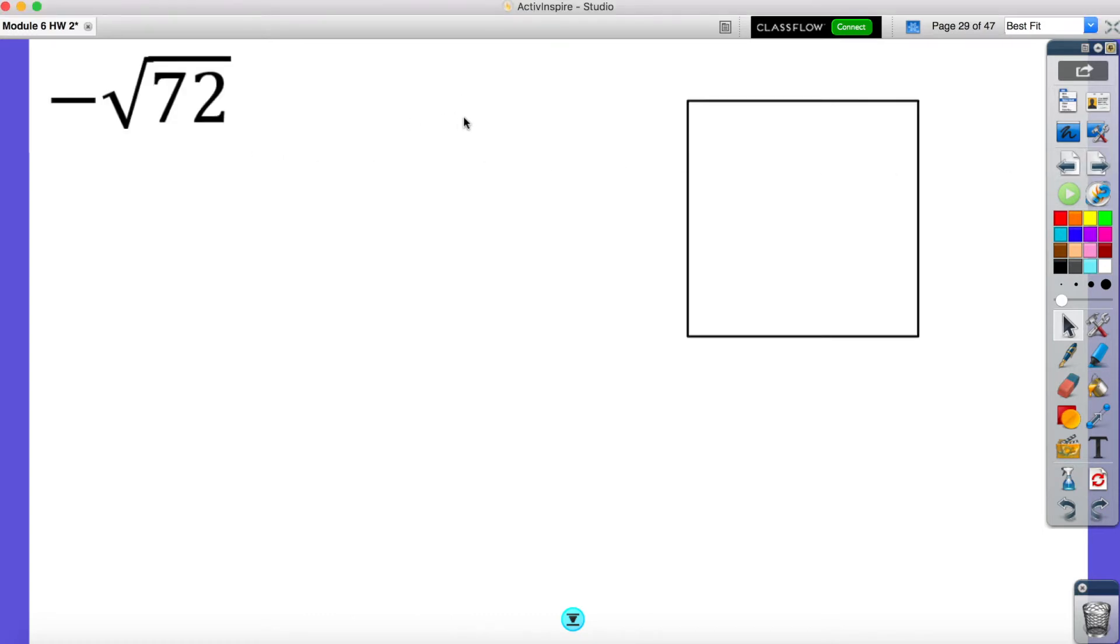So what we're going to do is I have the square root of 72, a negative radical 72. And essentially what this is saying is negative 1 times radical 72. So the first thing I'm going to do is take the square root of 72. Now you might have noticed that that is not a perfect square.